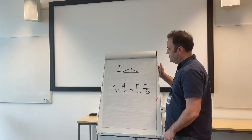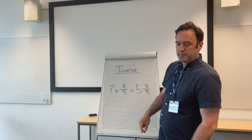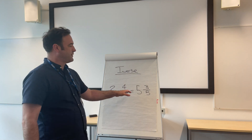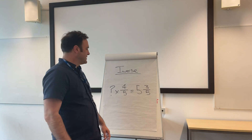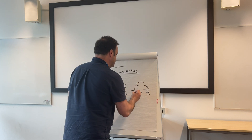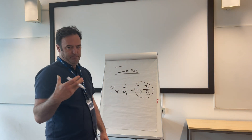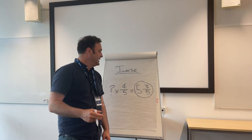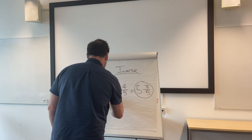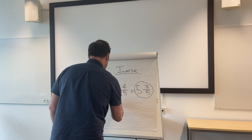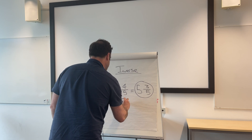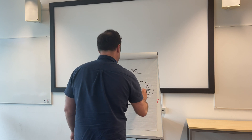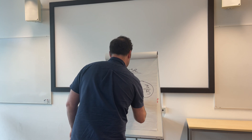We've got a fractions problem here where we've got something times 4 fifths equals 5 and 3 fifths. The first thing I always tell kids to do is, if you see mixed numbers, turn it into an improper top-heavy fraction first. Then we can see what we're dealing with. So we've actually got a question mark times 4 fifths equals 28 fifths.